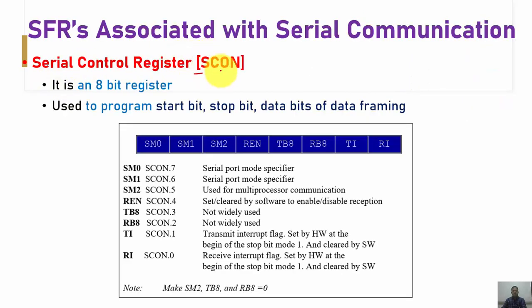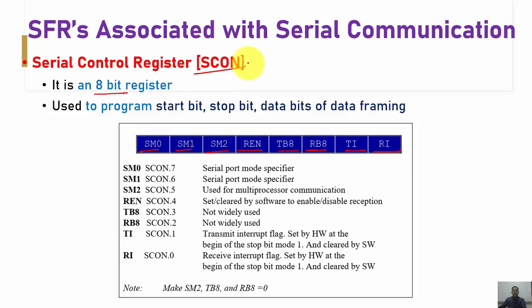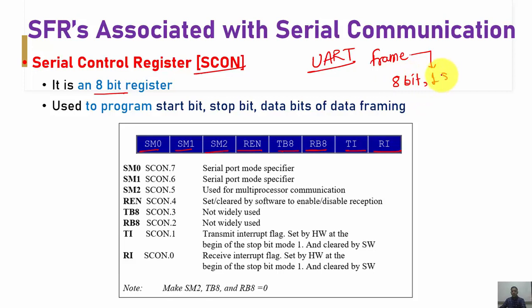The next SFR is the SCON register — the Serial Communication Control Register. It is an 8-bit register with bits: SM0, SM1, SM2, REN, TB8, RB8, TI, and RI. The 8051 uses UART — Universal Asynchronous Receiver Transmitter — where data is transmitted in the form of a frame. This frame consists of 8-bit actual data, one start bit, and one stop bit.